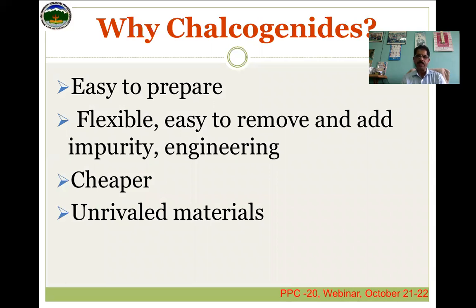These glasses are bonded by covalent bonds, so they are known as covalent bond materials, glassy semiconductors, or covalent glasses. Why are we interested in chalcogenides? They are easy to prepare — the efforts required are negligible in comparison to obtaining crystalline materials. Their structures are flexible; we can easily remove and add impurities, which means we can engineer the material as per our desire. They are cheaper compared to their crystalline counterparts. In short, these are unrivaled materials because of their excellent properties — they have no rival.